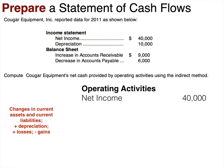So let's start by looking at a very simple operating activity section of a statement of cash flows. We're given a little bit of income statement information and a little bit of information from a balance sheet — not a complete income statement and not a complete balance sheet. We're just going to look at how that information plays a role in the operating activity section.